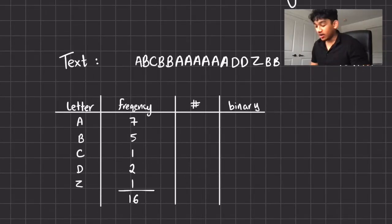So what I have here now is the letters in the actual text and the frequency of each letter. So I'm gonna have seven A's, five B's, one C, two D's, and one Z. And in total we have 16 characters.